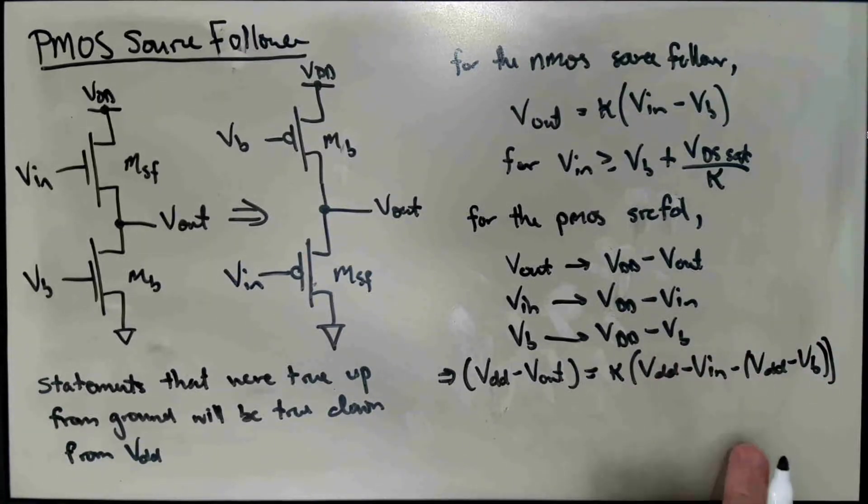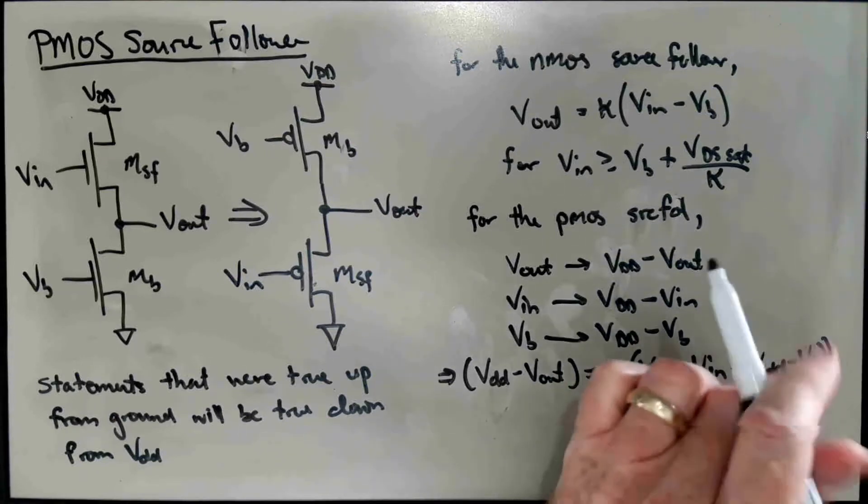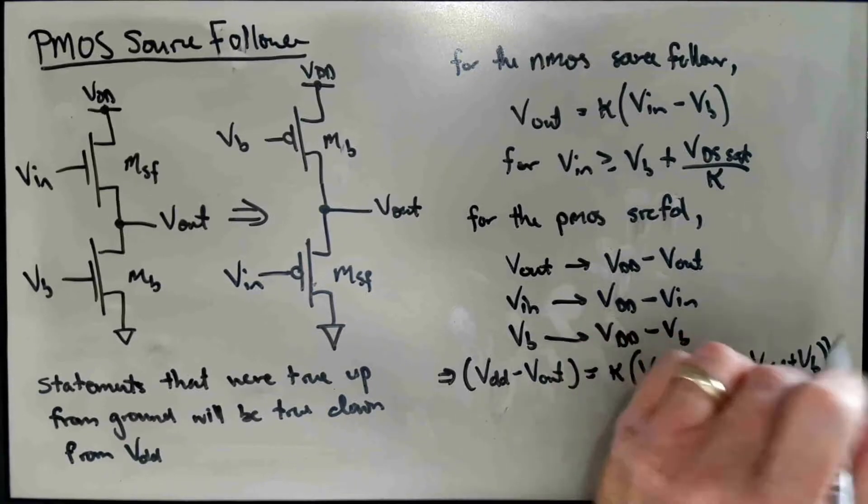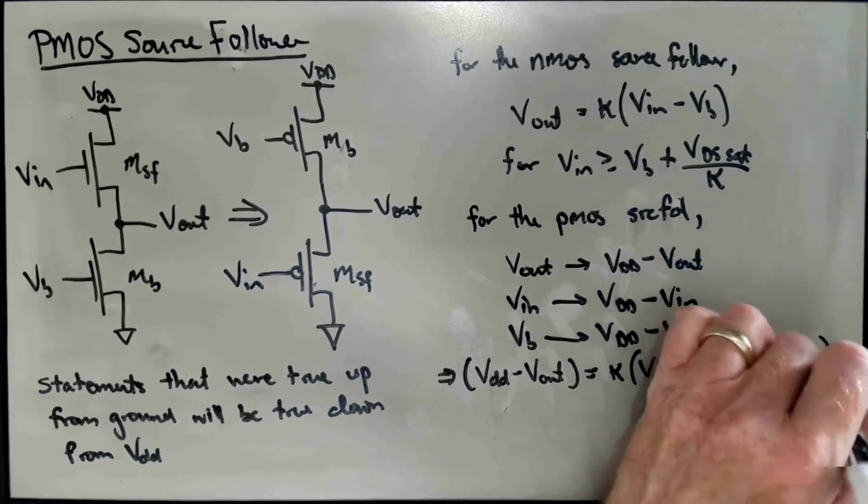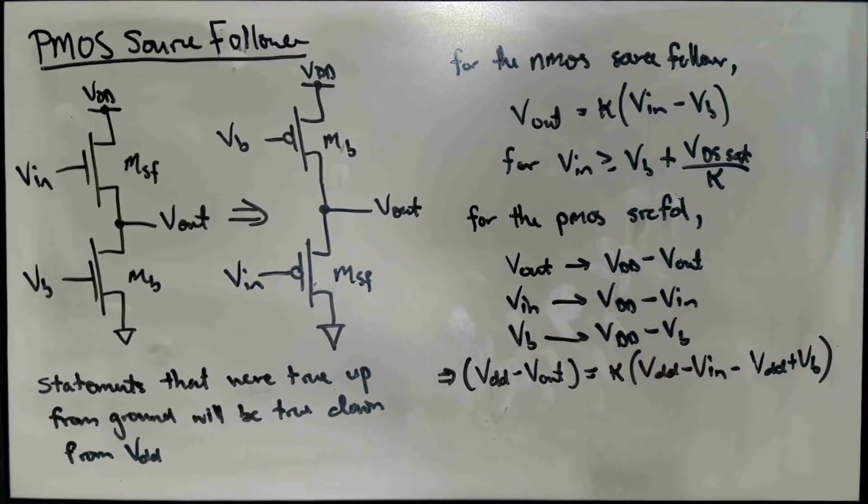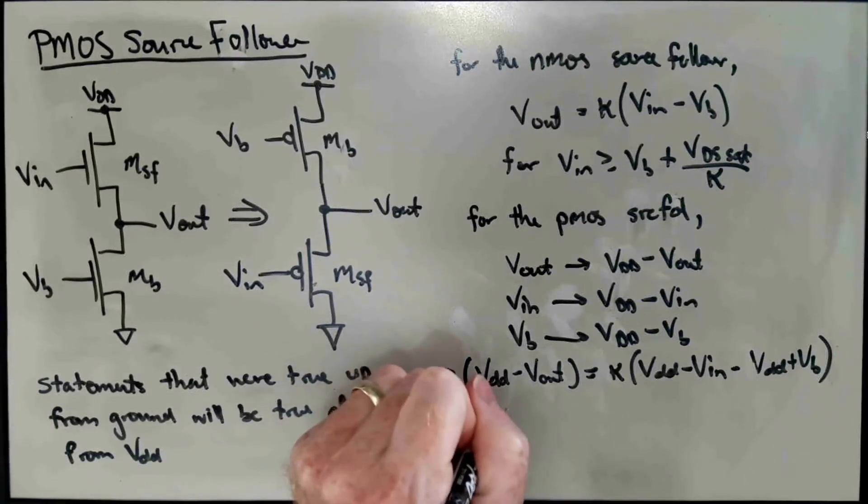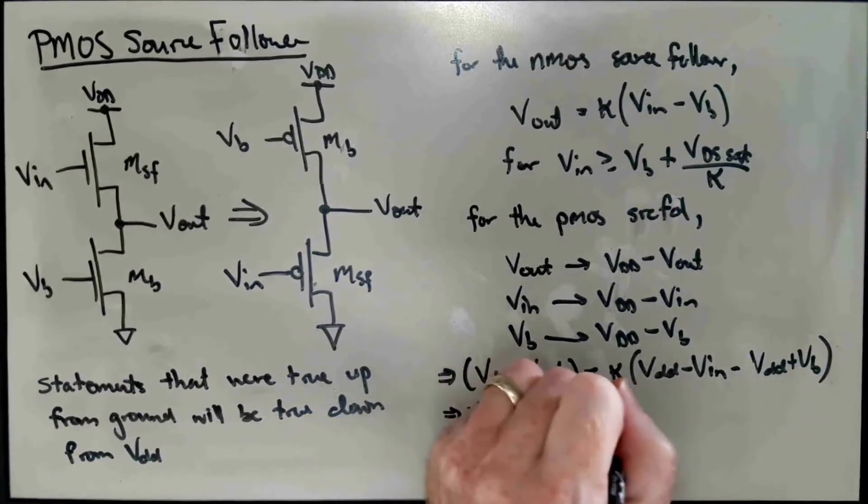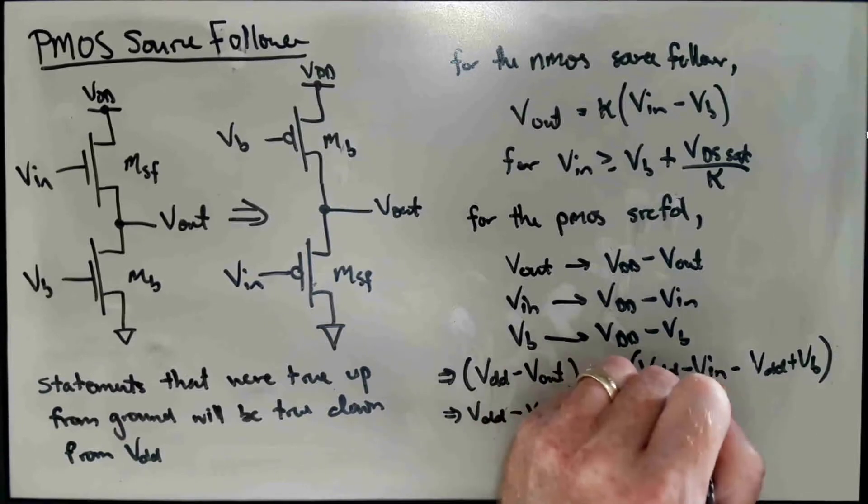Obviously, if we like, we can distribute the minus sign here through that, and we get minus VDD plus VIN, or rather VB. That gets rid of one parenthesis there. We have a VDD minus a VDD.